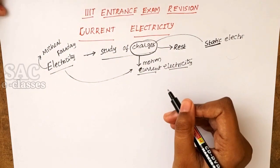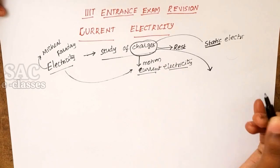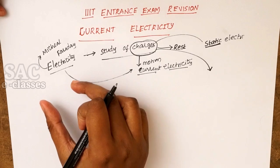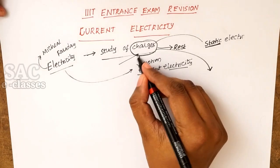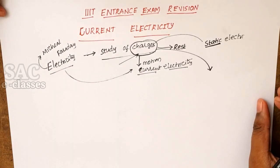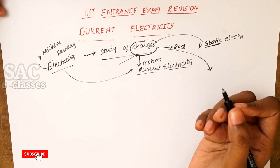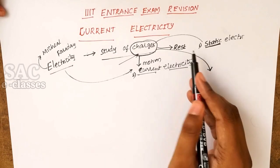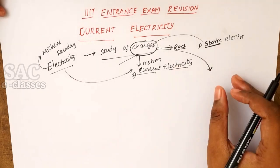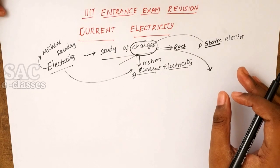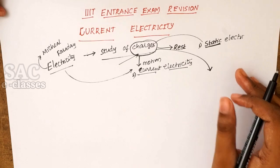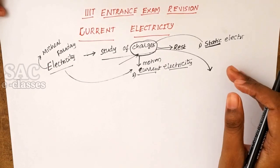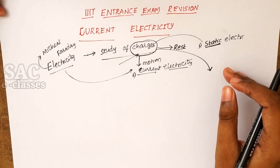Before learning about electricity, let's have a brief look at charge. There are two types of electricity: static electricity and dynamic or current electricity. Our topic is current electricity. Charge is a kind of force of attraction experienced whenever it is placed in an electromagnetic field.